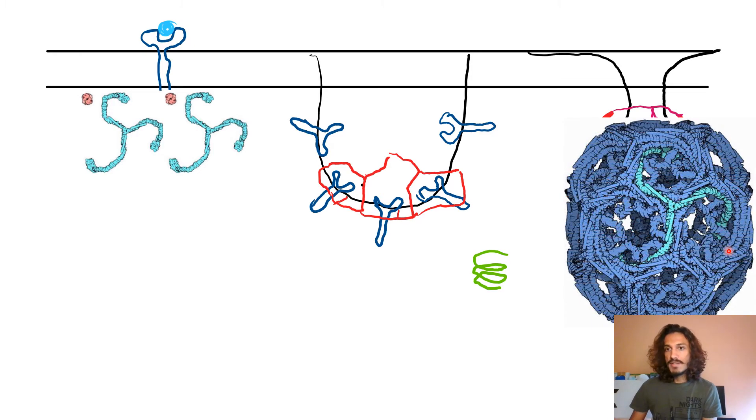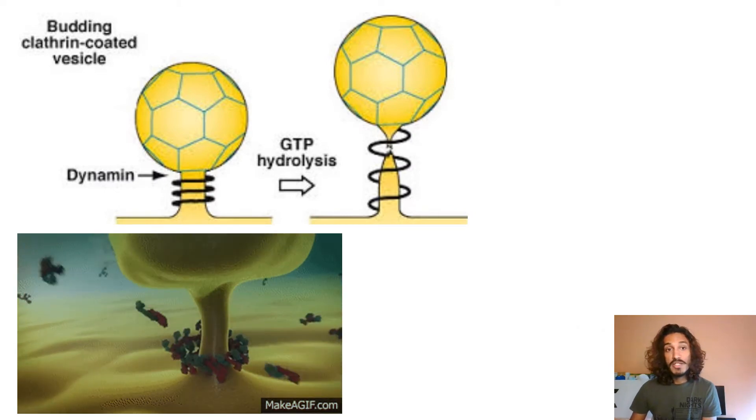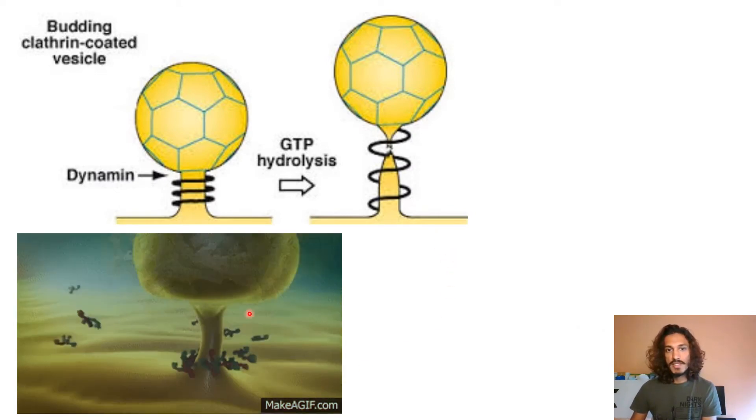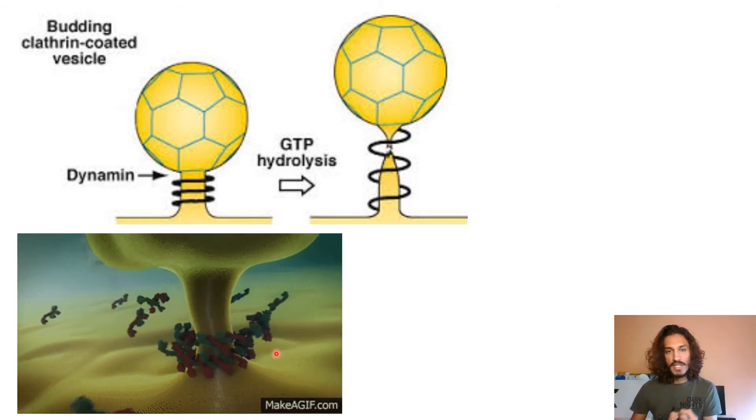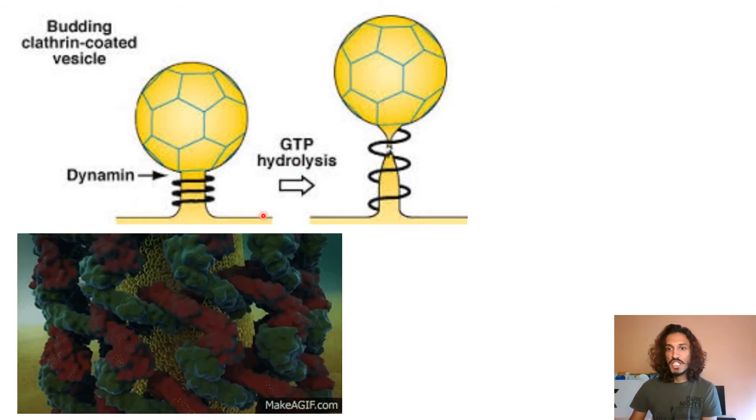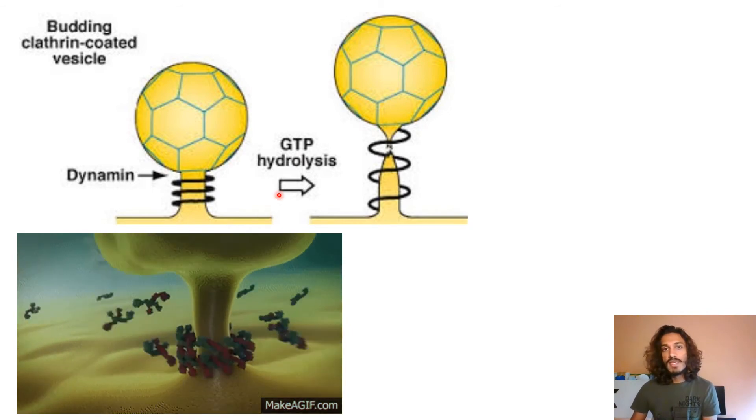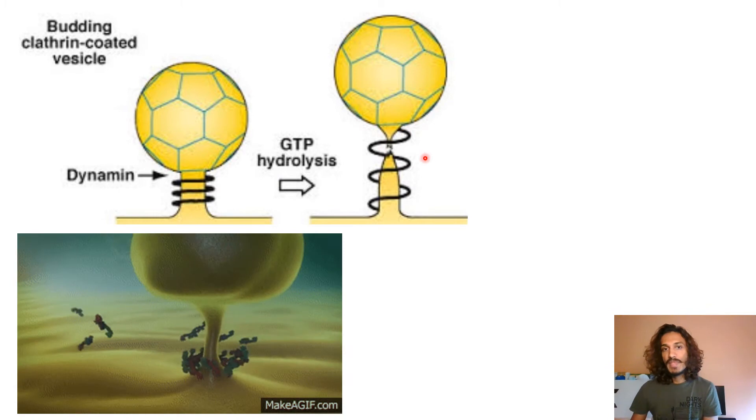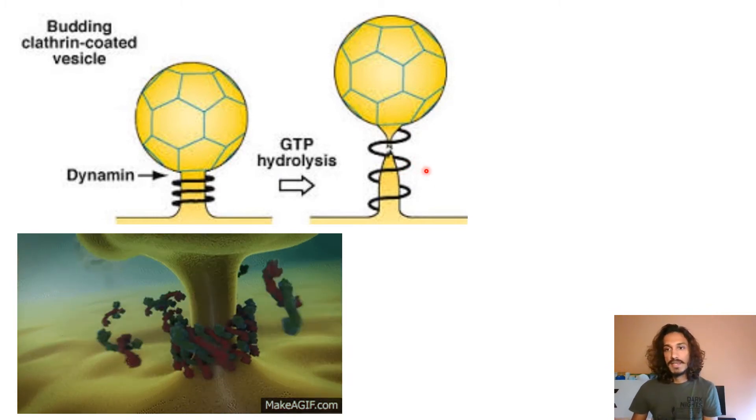That is when your dynamin is also going to come. This happens side by side and that will help in your budding process. You can see how the dynamin structures are coming, organizing themselves, and with the help of GTP they hydrolyze GTP and use the energy to move up like a spring, and that will help in internalization.